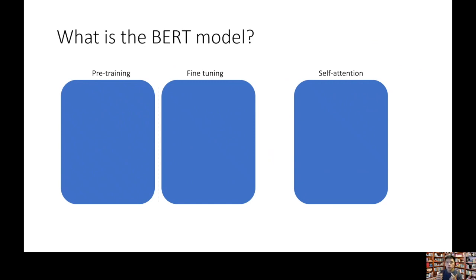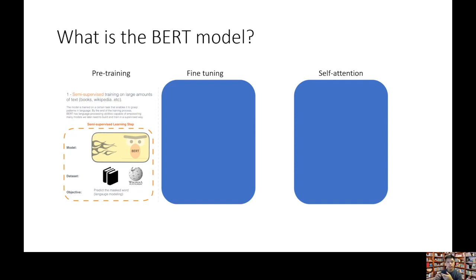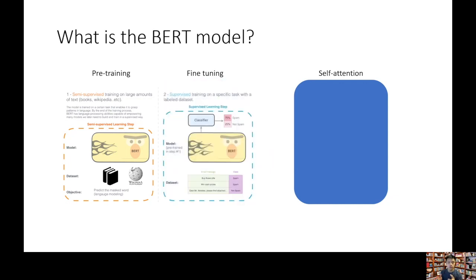How does BERT fit into this? BERT stands for bi-directional encoder representation from transformers. BERT is one of the neural network language models. There are two main concepts: BERT leverages pre-training and fine-tuning. BERT pre-trains on Wikipedia and books to understand language in general, and then we can do what is called fine-tuning so BERT can be used for our specific use case.